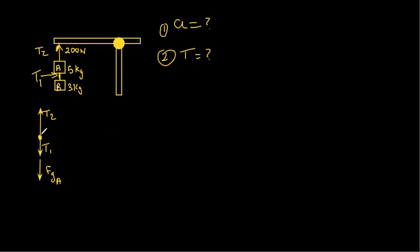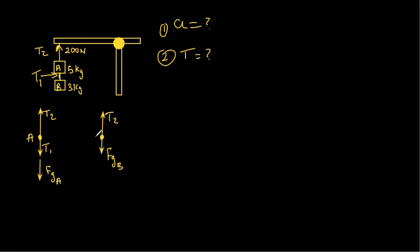Now, for mass B, you have two things: basically just the force of gravity and tension two — so you have tension two and the force of gravity for B. Now you need to make an equation for each of them.